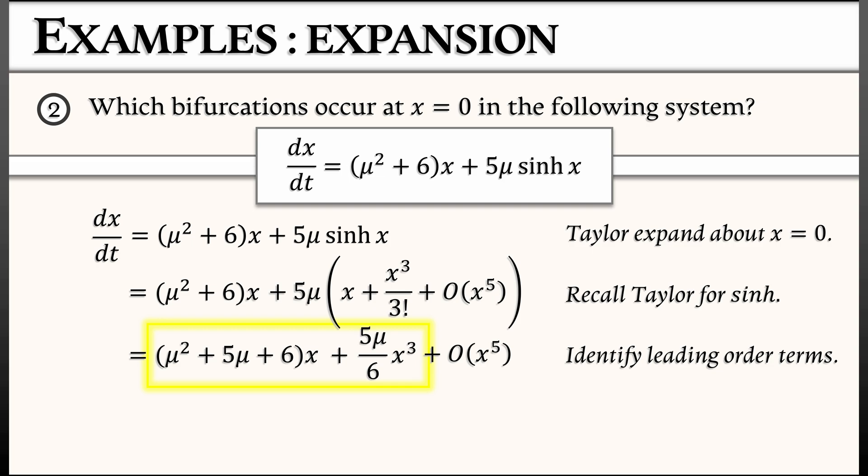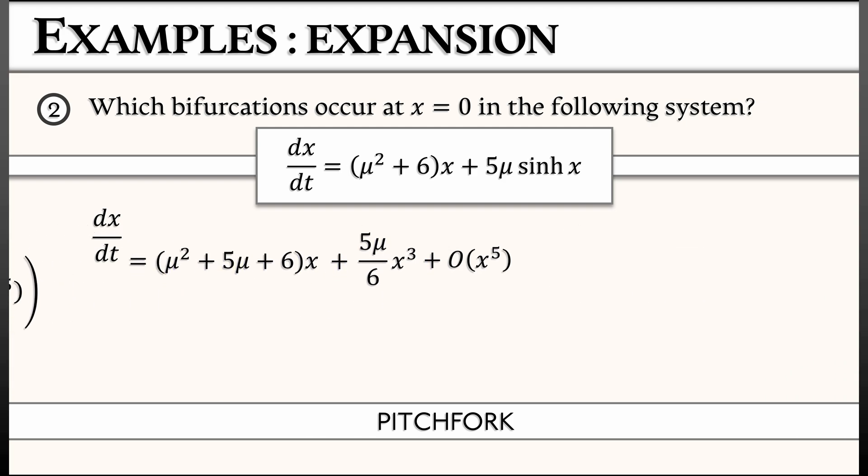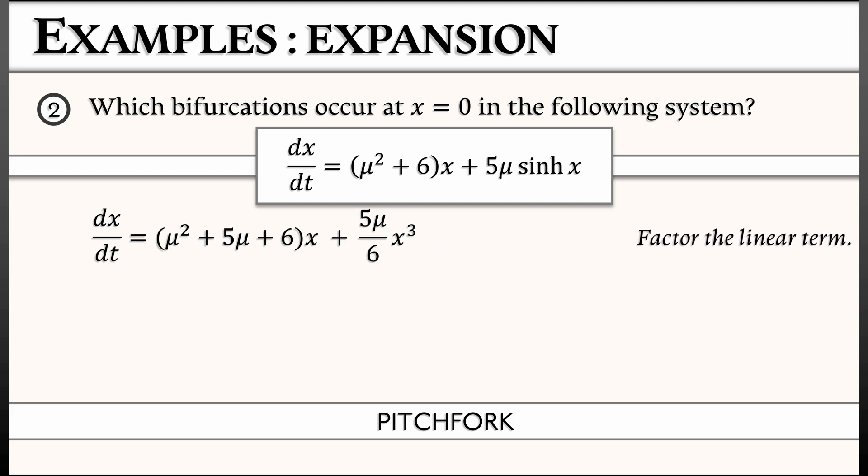And this is great because within the cubic part, we see the normal form for the pitchfork bifurcation. Now, it looks a little bit complicated because of the coefficient in front of that linear term. But what I'm going to do is take that quadratic polynomial in mu, factor that out into mu plus 2 times mu plus 3. And then I can conclude where the bifurcations happen. And it's bifurcations because there are two places where this linear term vanishes. At mu equals negative 2 and at mu equals negative 3. So we've got a pitchfork bifurcation at each of these locations.